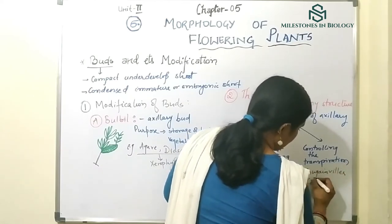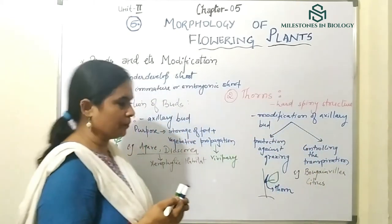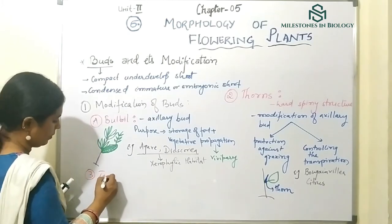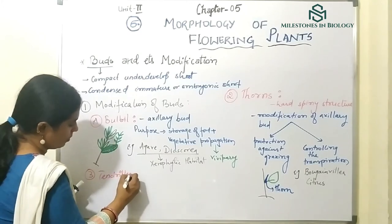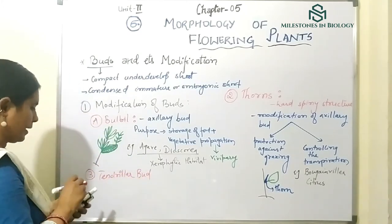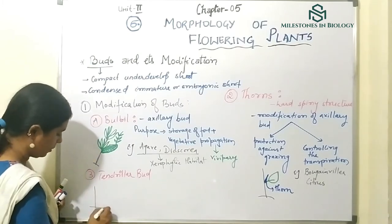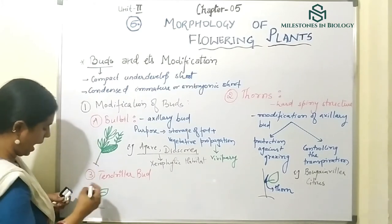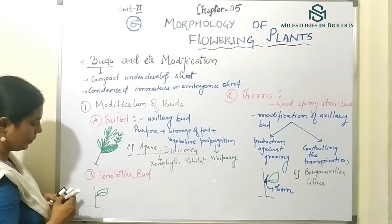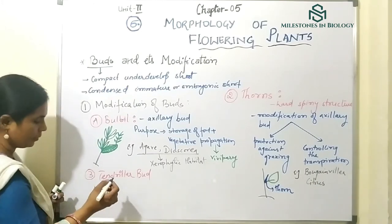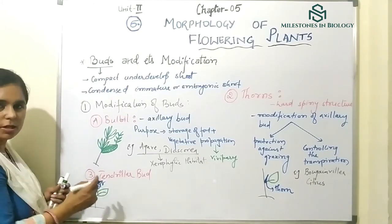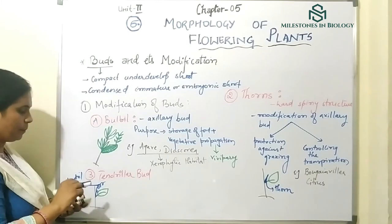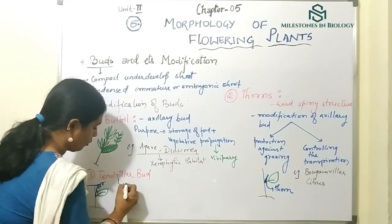The third modification is the tendril bud. In this case, the axillary bud becomes a tendril — a thread-like structure. The purpose of the tendril bud is for climbing and providing mechanical support.